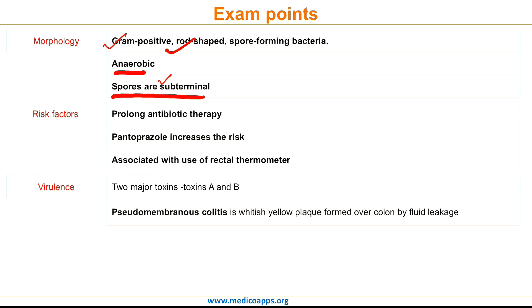Regarding virulence factors: there are two toxins, Toxin A and Toxin B, out of which Toxin B is very important. Both toxins glucosylate GTP-binding proteins, leading to disruption of cell cytoskeleton, which further leads to leakage of fluid and formation of pseudomembranous plaques on the colon.